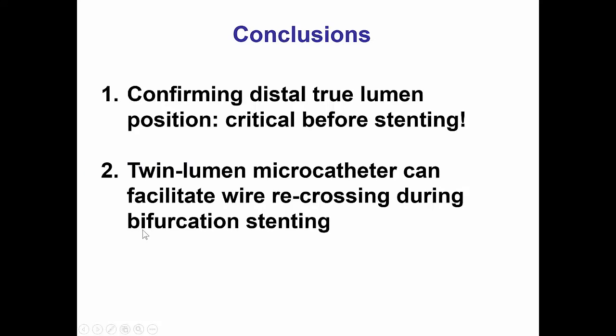The main lesson in this case is that distal true lumen position confirmation is critical before placing stents, because had we not been able to re-enter, we would have essentially lost flow to a very large, important branch. Also, using a dual-lumen microcatheter can be very useful in rewiring through bifurcation stenting, as well as during bifurcation crossing attempts. Thank you.